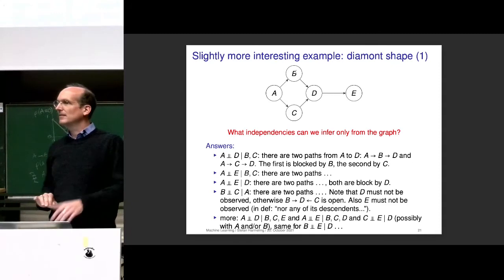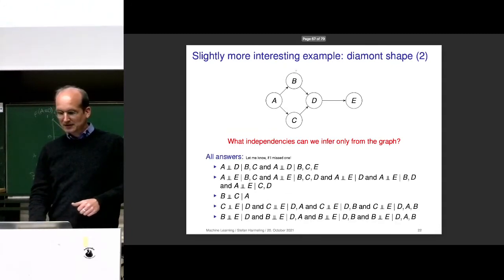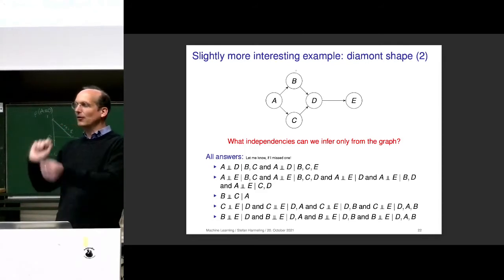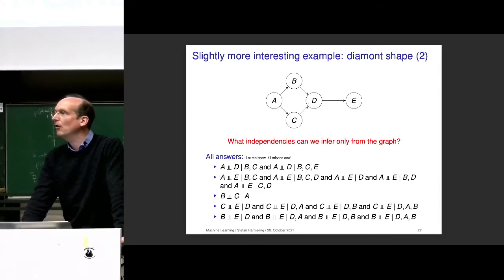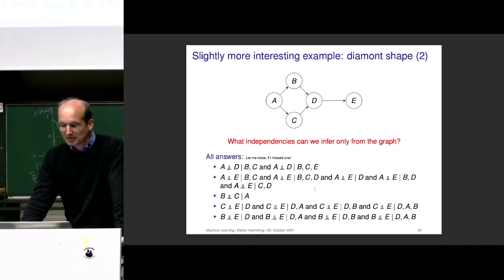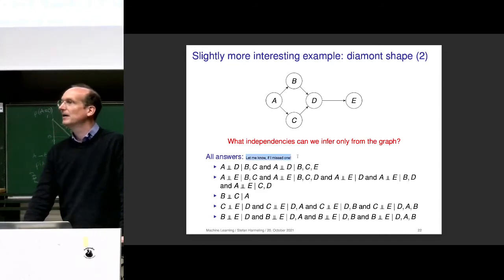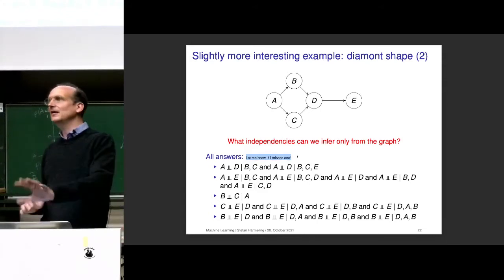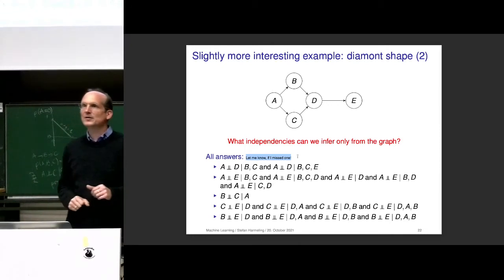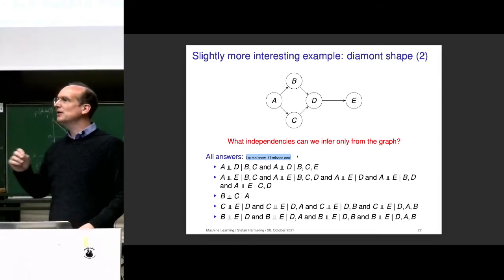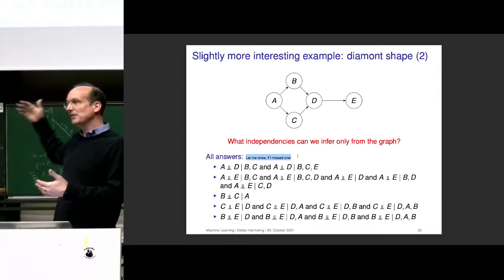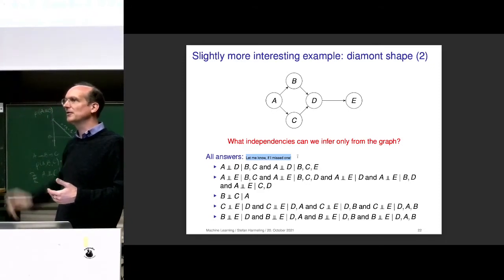There are more examples. For C and E, you can block by D, or by D and A, or by D and B, or by D, A, and B — all are possible independent sets. Please check on the exercise whether you got the idea. If I were you I would put this slide away, do the exercise using the definition from the previous slide, and then compare with the solution.